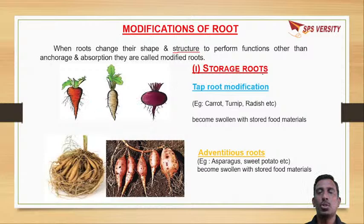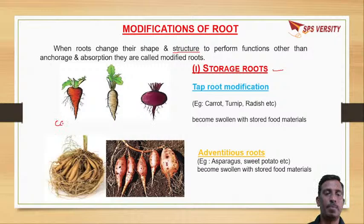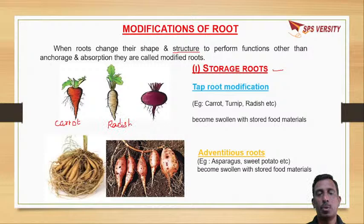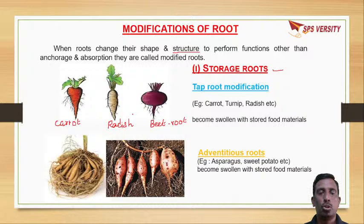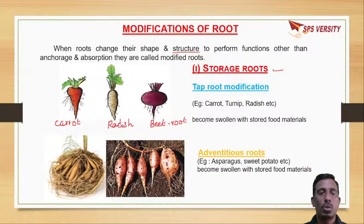For example, these are the roots which store food, called storage roots. Like carrot and radish, where tap roots store food material. Beetroot, where tap roots will store food material. These are all used as vegetables. Due to storage of food it becomes fleshy. Carrot, radish, beetroot - also called turnip - where tap roots store food.